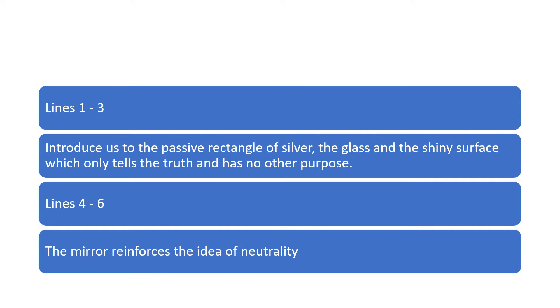Now, lines 1 to 3 in the poem are the opening lines. They introduce us to the passive rectangle of silver, the mirror, the glass, the shiny surface that is there. And this only tells the truth about what the individual or the woman in the poem wants to see. It is telling the truth. There is no other purpose to the mirror, just to tell the truth. The reality is that mirrors have no early knowledge of anything. They are as they are.